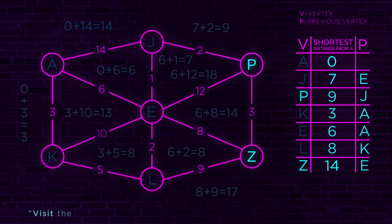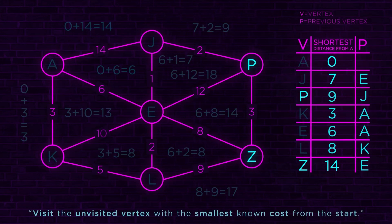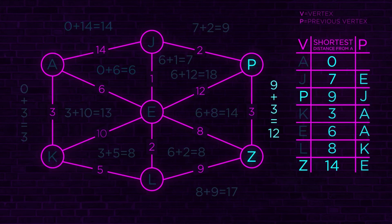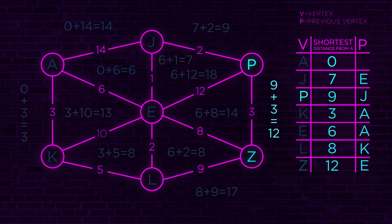Visit the unvisited vertex with the smallest known cost — that's P at a cost of nine. Its only unvisited neighbor is Z. The cost: nine plus three equals 12. Z was previously 14, and now it's 12 — so we update it to 12. The previous vertex for Z is now P. We can take out P — it's done.